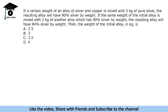Next question. If a certain weight of an alloy of silver and copper is mixed with 3 kg of pure silver, the resulting alloy will have 90% silver by weight. If the same weight of the initial alloy is mixed with 2 kg of another alloy which has 90% silver by weight, the resulting alloy will have 84% silver by weight. We need to find the weight of the initial alloy.